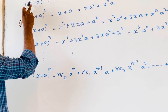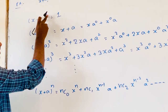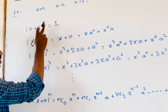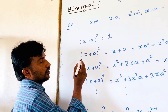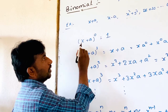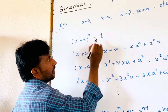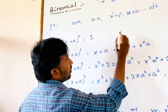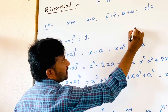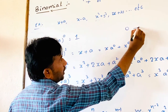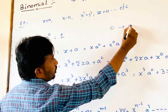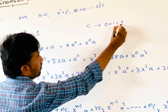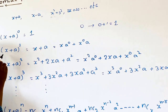Now observe: in the expansion of (x+a) whole power 0, the index is 0 and the number of terms is equal to 0 plus 1, which becomes 1 term. In the expansion of (x+a) whole power 1, the number of terms is equal to 2, that is 1 plus 1 means 2. Index is 1, number of terms is 1 plus 1, which is 2.